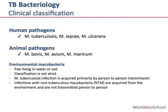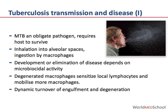Mycobacterium tuberculosis infection is acquired primarily from person-to-person transmission, as opposed to infections with non-tuberculous mycobacteria, which are primarily acquired from the environment and are not transmitted person-to-person. Mycobacterium tuberculosis is an obligate pathogen and requires a host in order to survive. The organisms are primarily transmitted by the inhalation of infectious droplets containing the tubercular bacilli into the alveolar spaces, where they are subsequently ingested by the host macrophages.